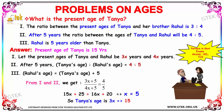We consider the present age of Tanya and Rahul in the ratio 3 to 4, which is nothing but 3x and 4x — they share a common factor x. After 5 years, Tanya's age and Rahul's age will be in the ratio 4 to 5. So we add 5 to both. Our third condition is Rahul's age is 5 years older than Tanya, so Rahul's age is Tanya's age plus 5.